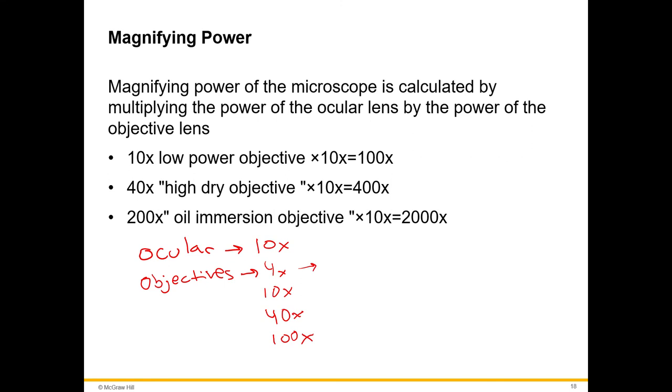Total magnification would be 40 times for the 4x objective lens. If we want to calculate total magnification of the 40x objective, we would do 40 times 10 to give us 400 times.